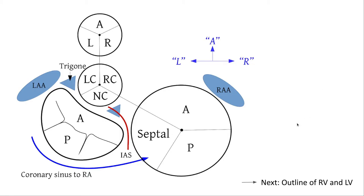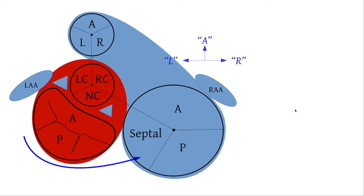Next, try to visualize the outline of the LV and the RV from this position. You can see the compact silhouette of the LV because of the close proximity of the inflow and the outflow valves, and the elongated banana or croissant-shaped outline of the RV because of the distance between the inflow and the outflow. You can also see these two grooves — the anterior and posterior interventricular grooves — which have major vasculature running through them: the LAD runs along this groove, and the PDA and posterior descending vein run along here.